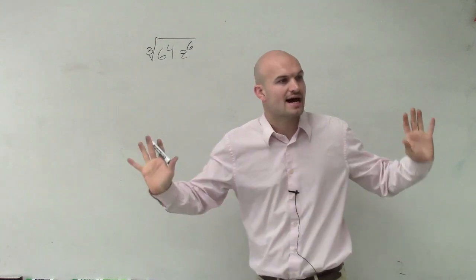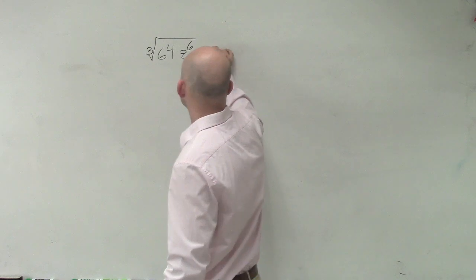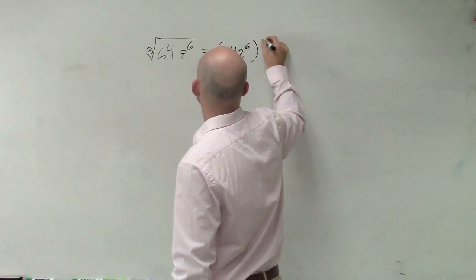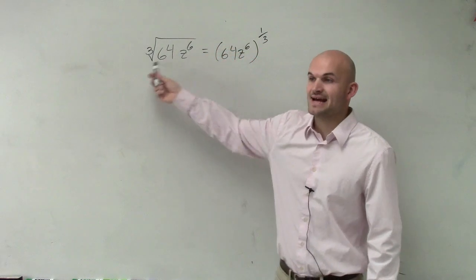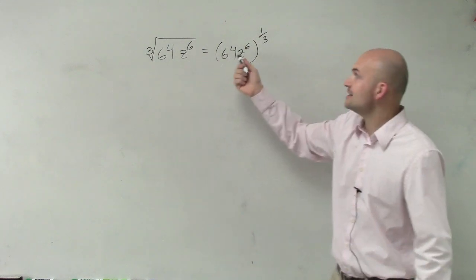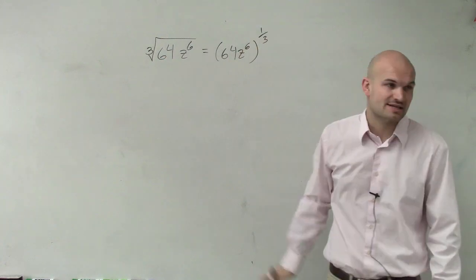First thing, let's convert this now back to a rational exponent. So therefore, we can rewrite this as 64 z to the 6 raised to the 1 3rd power, right? Because inside of here, this whole expression is not being raised to a power. Yes, I know 6 is being raised to a power, but not the whole thing is being raised. So it's just going to be raised to the 1 3rd power.